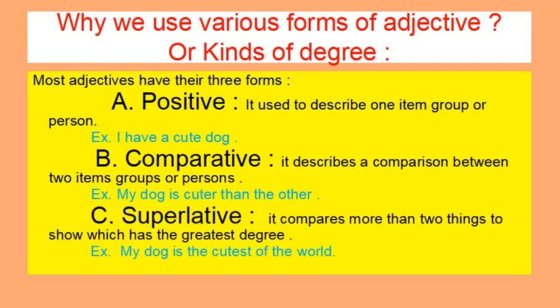Why do we use various forms of adjective or adverb? Positive degree is used to describe one item, group, or person. Comparative degree describes a comparison between two items, groups, or persons.